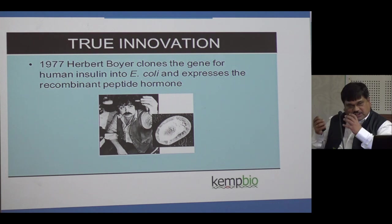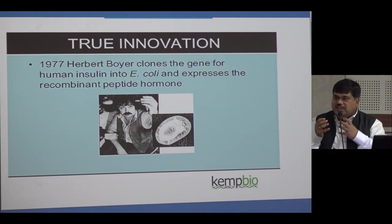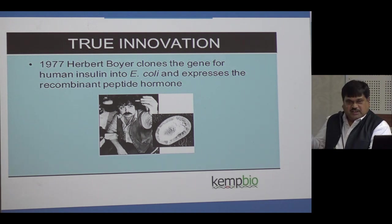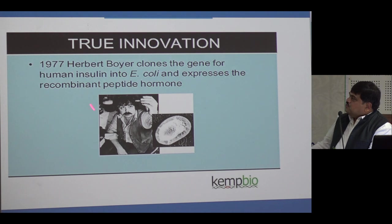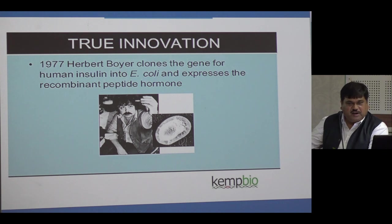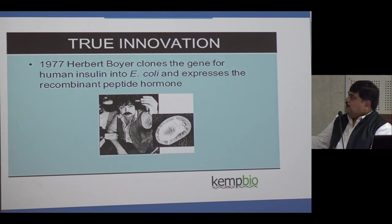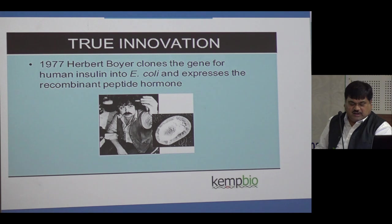The first gene studied well was insulin — Banting and Best discovered it because of diabetes. But the true invention was inserting the human insulin gene into E. coli, culturing bacteria in fermenters, and extracting insulin. This was the first human protein to be produced in a factory. This gentleman inserted the human gene into bacteria and grew them in tons in a fermenter, producing insulin at scale.